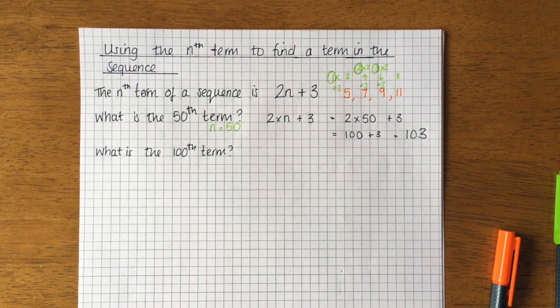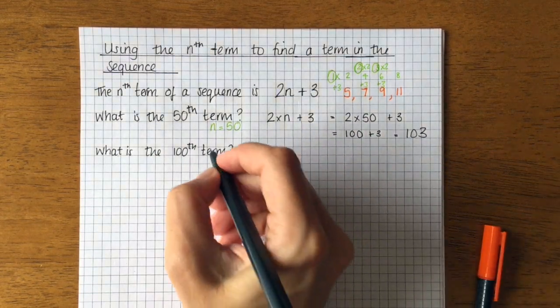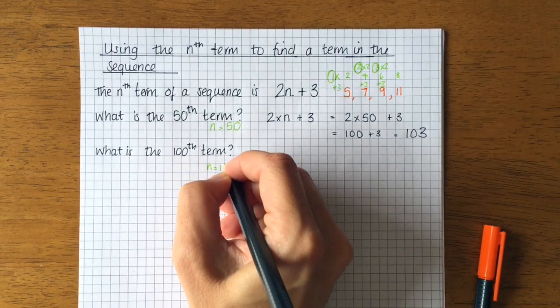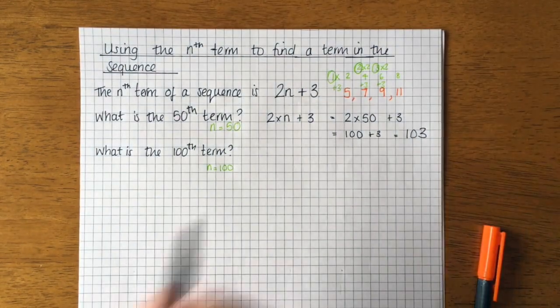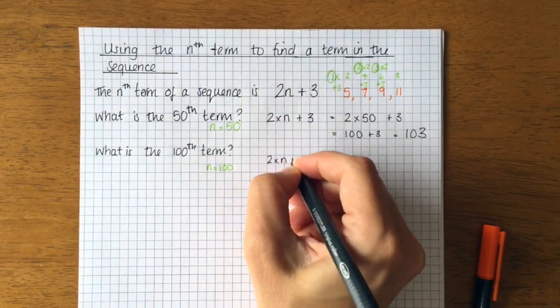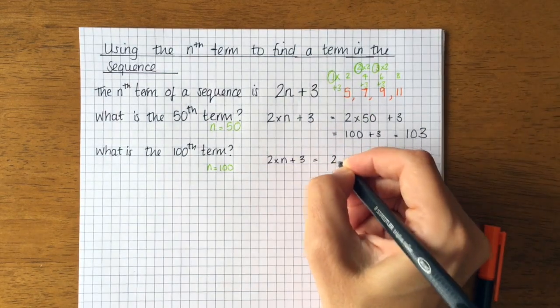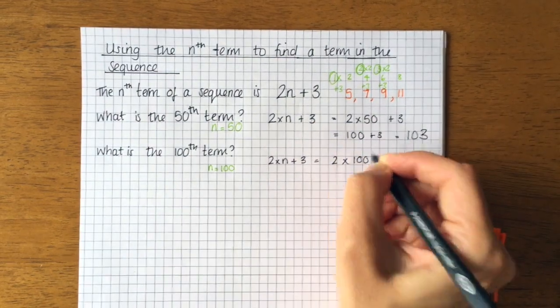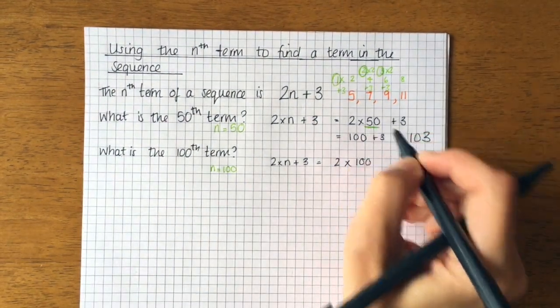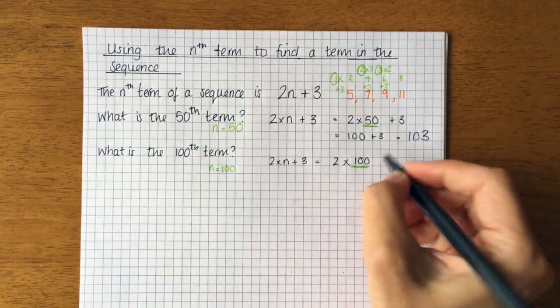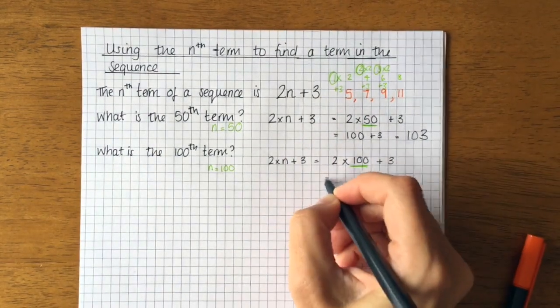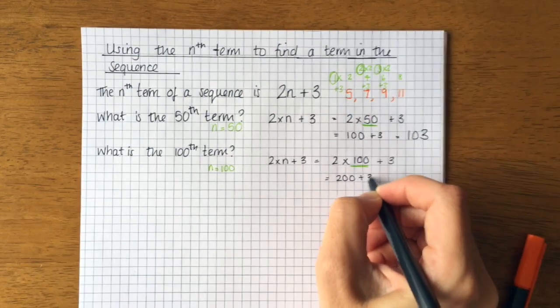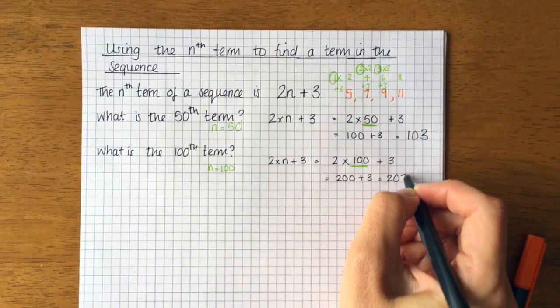We're going to do the same thing now for the 100th term. So if n equals 100, I've got 2 times n plus 3. So this time, n is 100. I can underline them so you can see that that's what we've done. And then I would add 3. So it's 200 plus 3, which is 203.